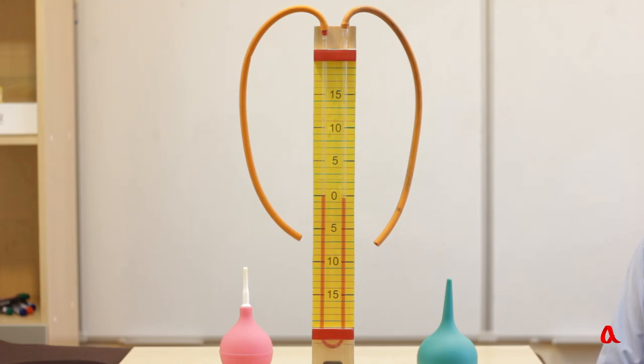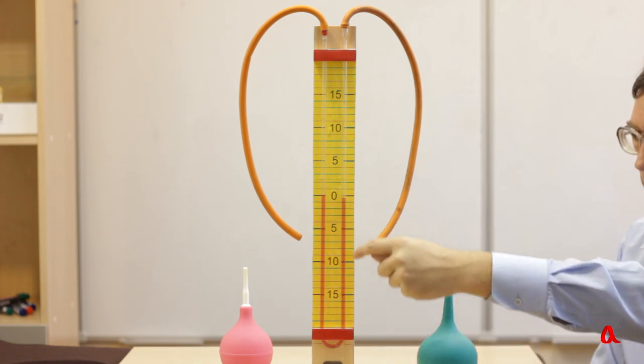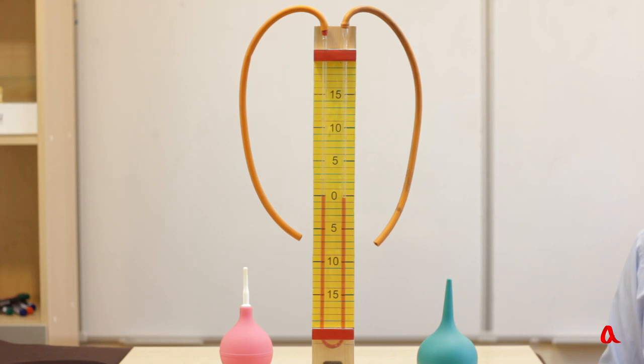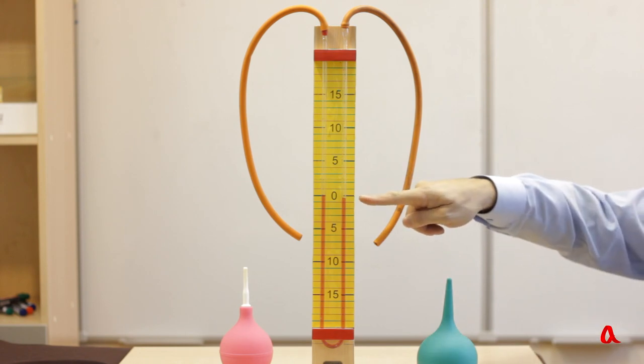A device which measures liquid or gas pressure is called a pressure gauge. The one you see now is intended for measuring small pressure differences. Its operating part is a glass tube shaped like the Latin letter U, which is why this type of pressure gauge is called U-shaped. The tube is filled with liquid so that it should be at zero in both bands.